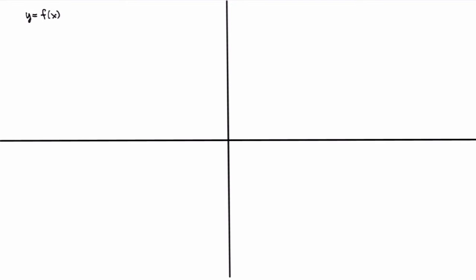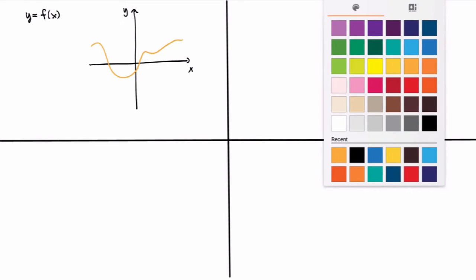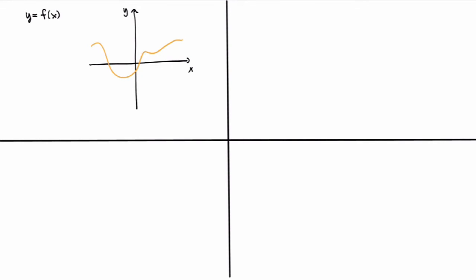So what have we seen so far? We studied a whole bunch of different functions y equals f(x), and we've learned many differentiation rules to calculate the derivatives of such functions. The geometric interpretation is: if you sketch the graph of a function, the slope of the tangent line at a given point is given by the derivative y-prime.